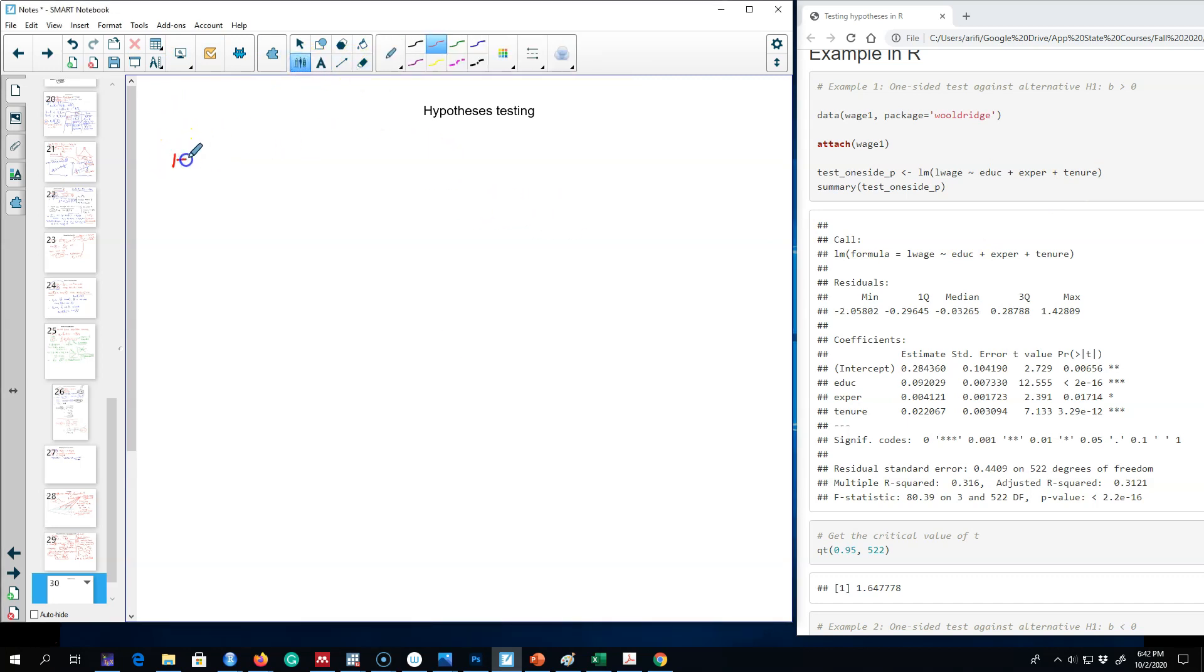The first thing we need to do is set up our hypothesis. Our H0 is that the beta of experience is zero, and we will test this against our alternative hypothesis that beta of experience is positive.